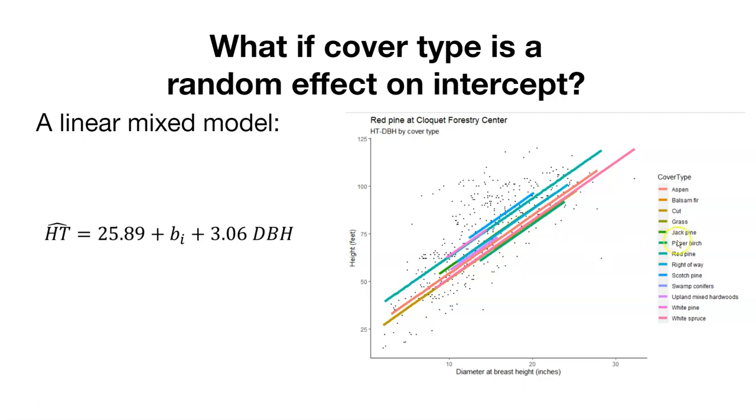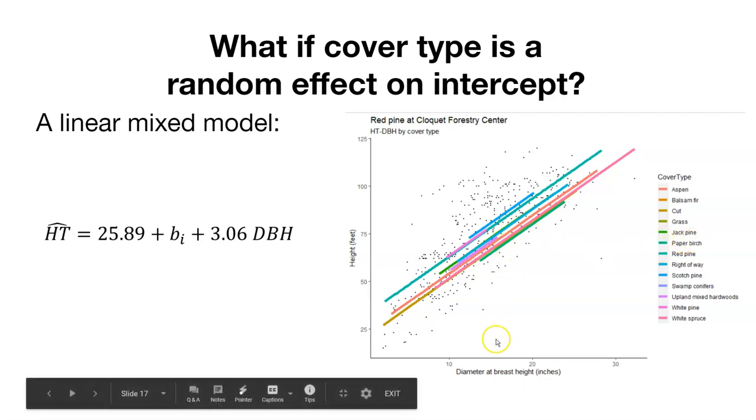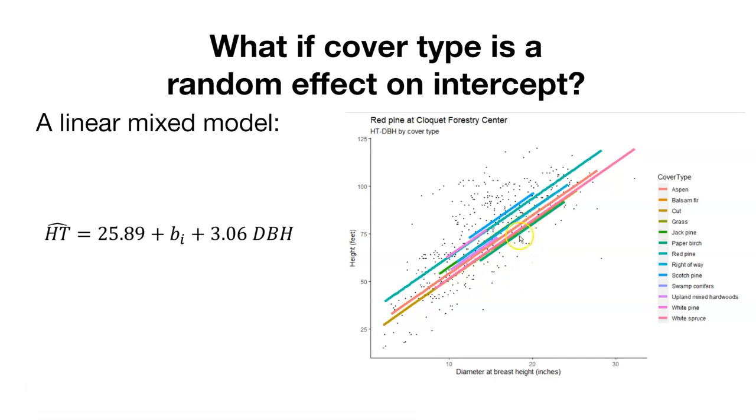The green line is the paper birch. We can understand now that red pine growing in the paper birch cover type seem to be shorter than other trees, or than other cover types. Note that they have the same slope, but different intercepts. This would be a good use of the random effect, placing it on the intercept.